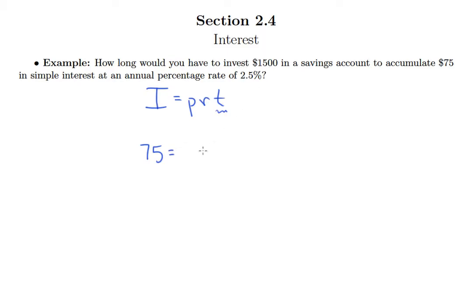It says we invest $1,500, that's our principal, and then our percentage rate is the decimal form of 2.5%, so 0.025, and of course T is our unknown.